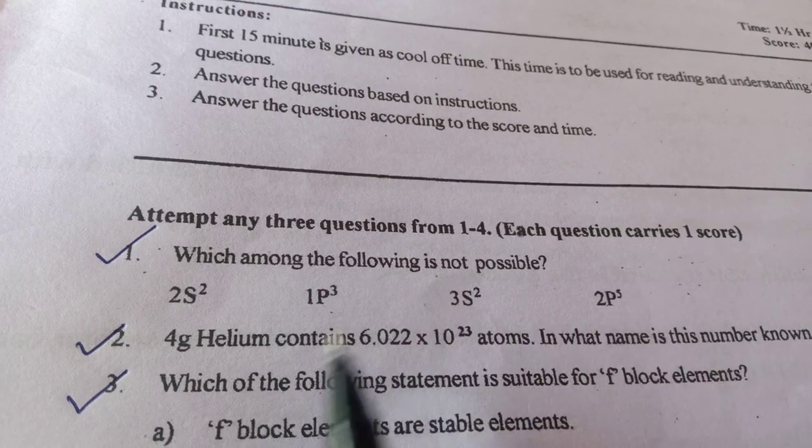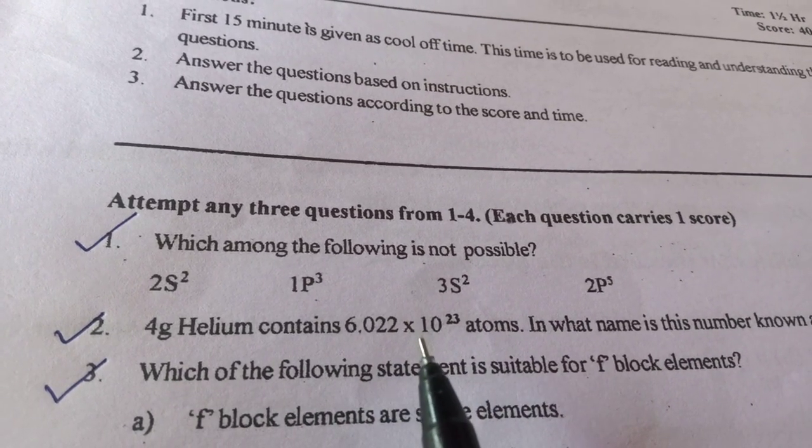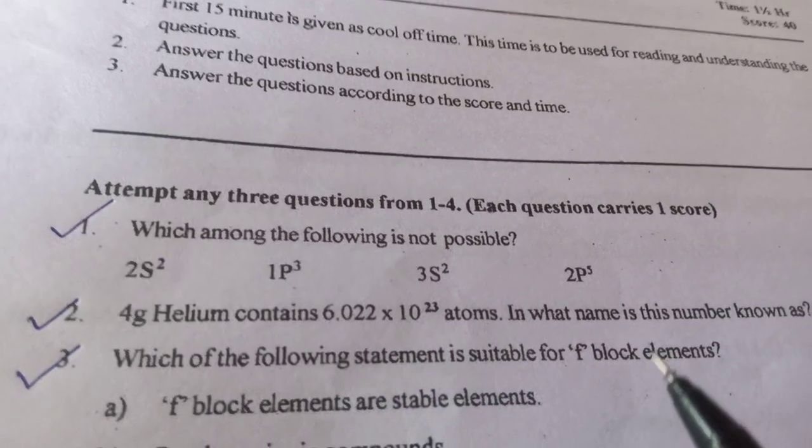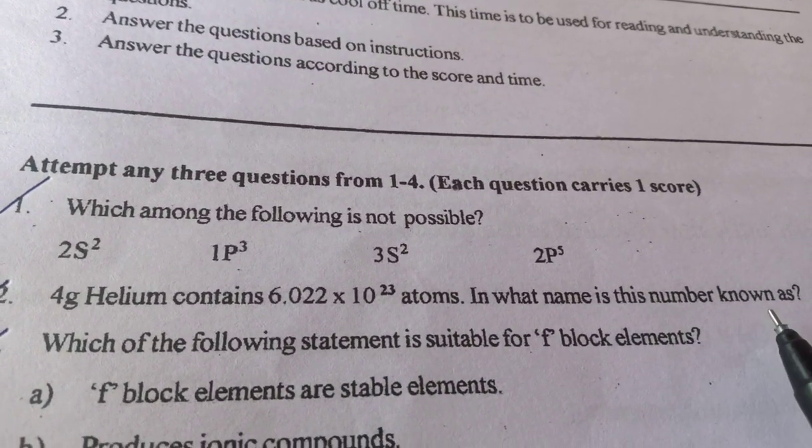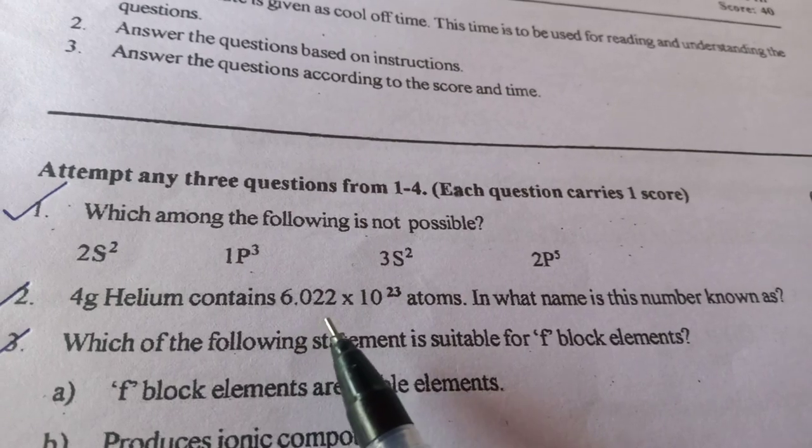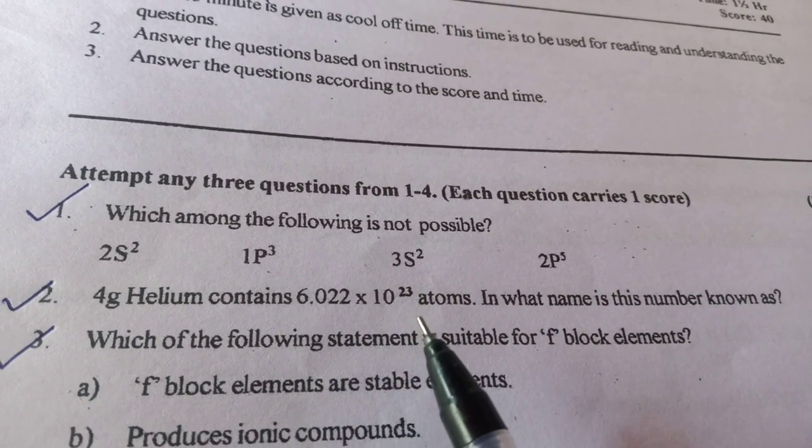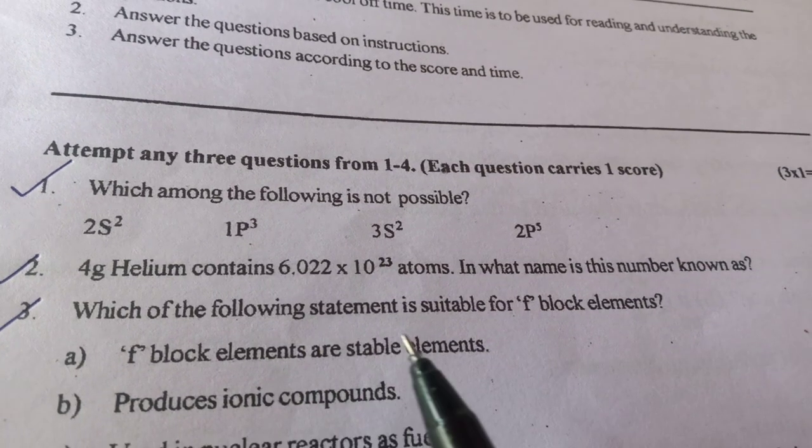Then, 4 gram helium contains 6.022 into 10 raise to 23 atoms. In what name is this number known as? It is 6.022 into 10 raise to 23, is Avogadro number.